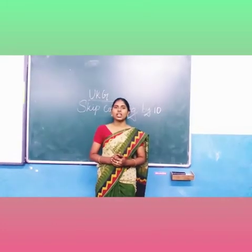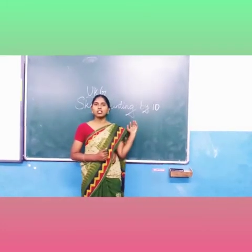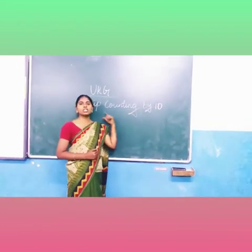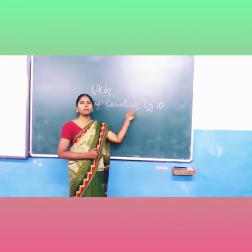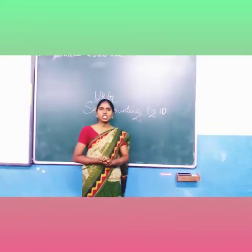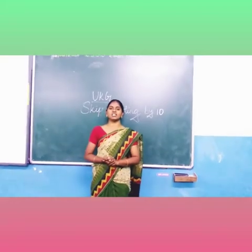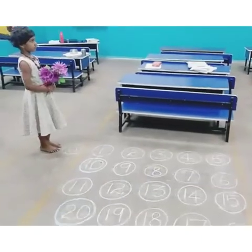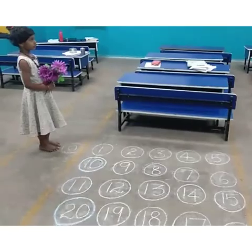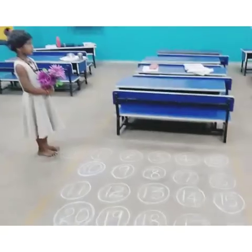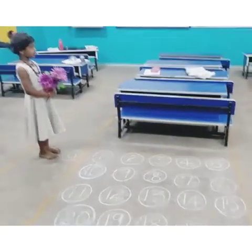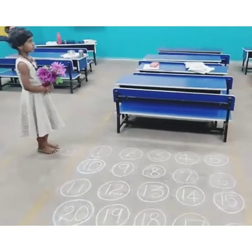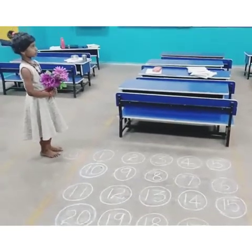Come on children. Today we are going to learn skip counting by 10. See here children, here is a girl. She is going to jump on the numbers 0 to 30. Let us learn through this how to skip count by 10. Shall we?